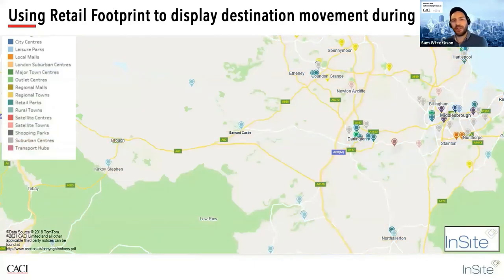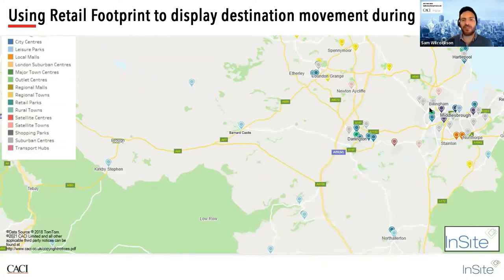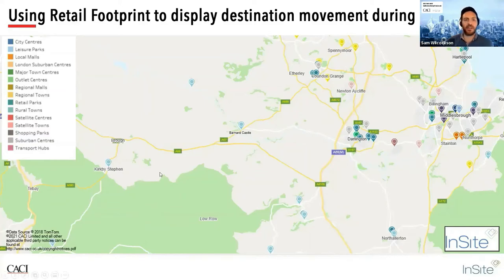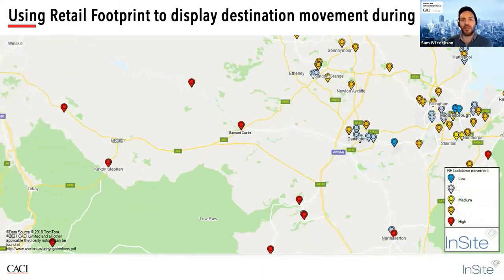Rather than looking at where people live, we'll flip it on its head and talk about where people are travelling to. This map shows the retail footprint centres, thematically mapped based on their class or type of destination. We have the dark blue city centre of Middlesbrough surrounded by a number of suburban centres and a couple of local malls just a little further south. There are trends we can apply to these locations as different destination classes show different interactions of movement. We're now looking at those same destinations from the viewpoint of movement during the first lockdown compared to pre-COVID levels — from the biggest reduction in footfall in blue to the least impacted in red.